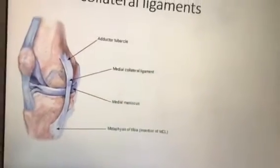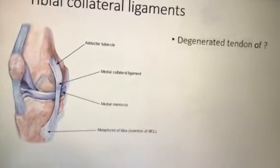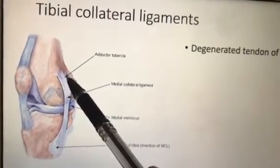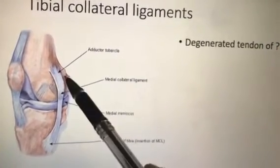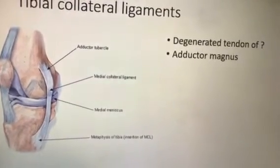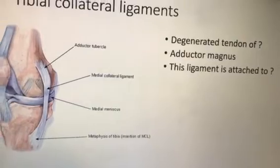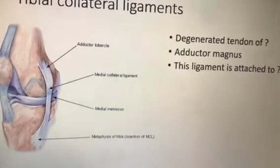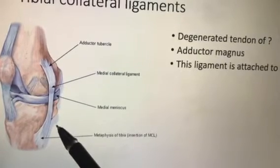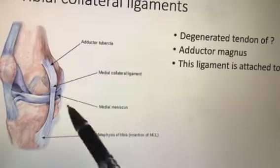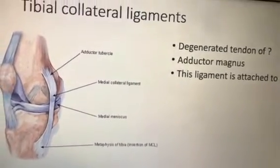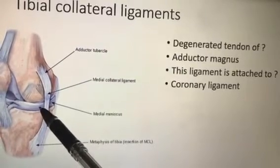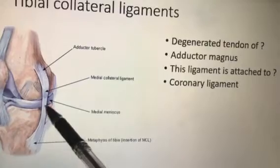The tibial collateral ligament: its proximal attachment is a degenerated tendon of the adductor magnus at the adductor tubercle. It is attached from the medial condyle of the femur to the medial condyle of the tibia. Here at the medial condyle, the pes anserinus muscles — sartorius, gracilis, and semitendinosus — come and get their insertion, crossing over the tibial collateral ligament.